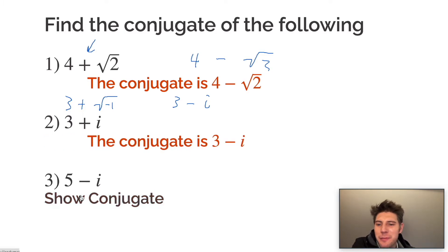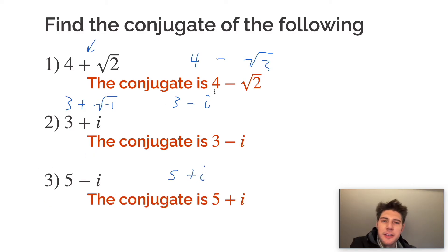And then for the last one, five minus i. So the conjugate for this would be five plus i, and that's the answer.